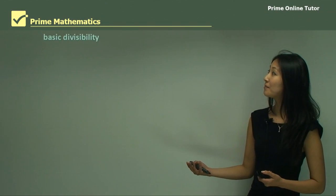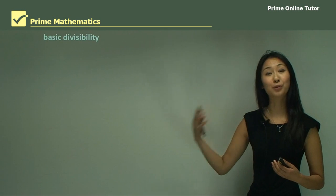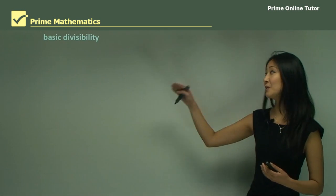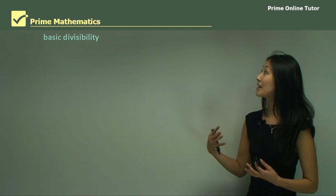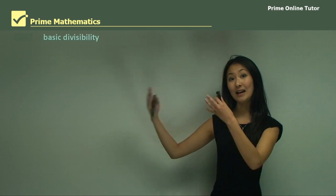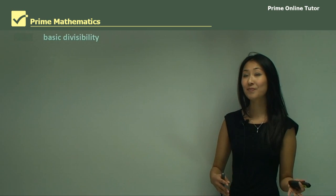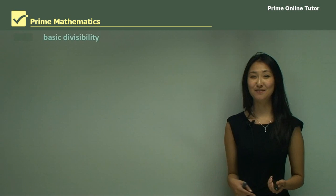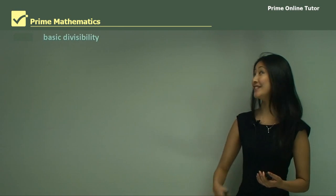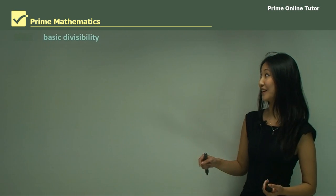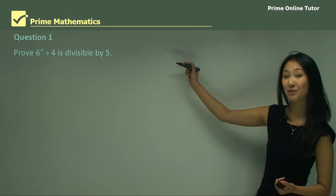Because it's mathematical induction it's still a formal proof, so we still need to go through the steps. Here we're going to be proving that an equation is divisible by a number — that's what we mean by basic divisibility. The best way to learn this is to jump straight into a question, and that's what we're going to do now. So let's jump straight into question one.